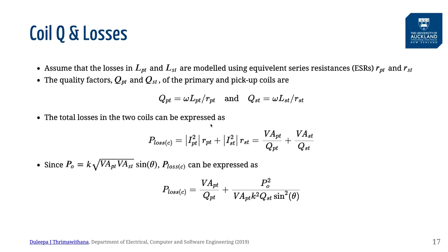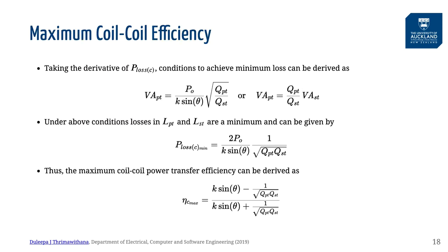There will be copper and core losses in the primary and pickup coils when they are conducting current. The losses in a coil are typically represented by the coil quality factor. Using the coil quality factors, we can express the total power loss as a function of VAs in each coil. Typically the losses in the coils account for a significant portion of the power losses, so it is advantageous to operate the coils at a point where losses are minimized. This happens when the VAs in the coils are distributed according to their quality factors.